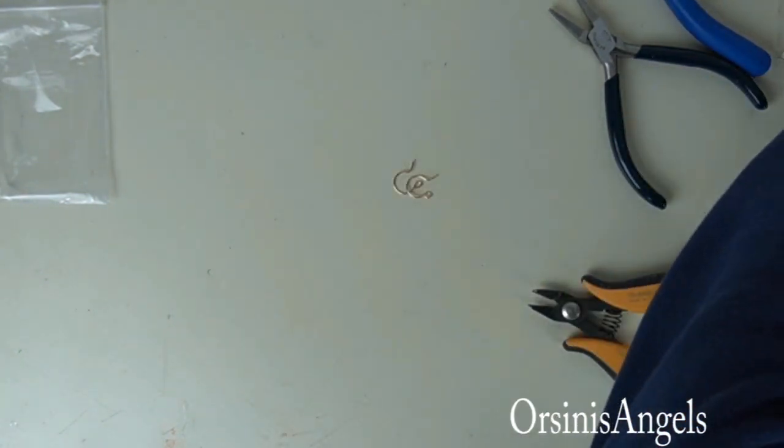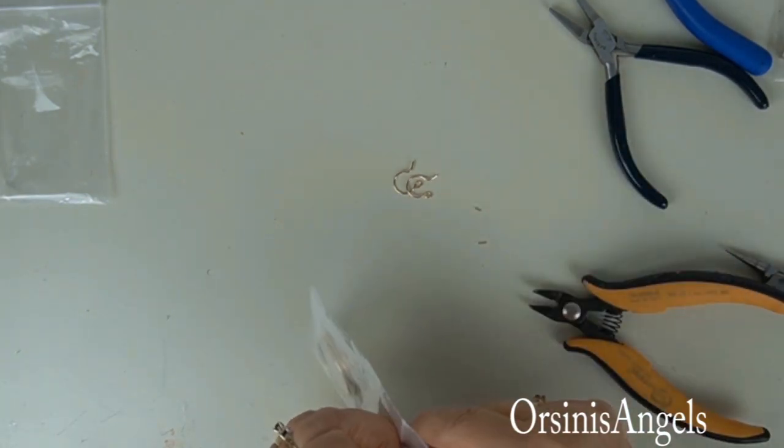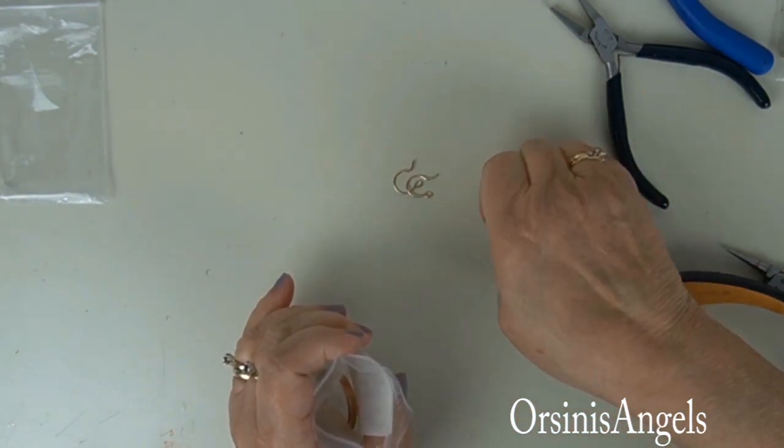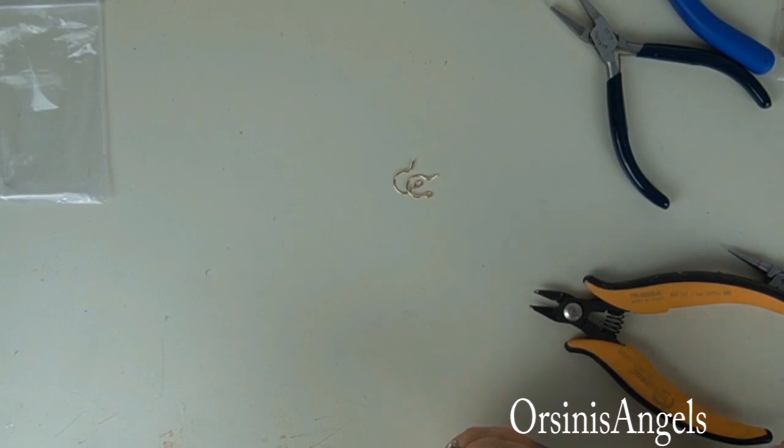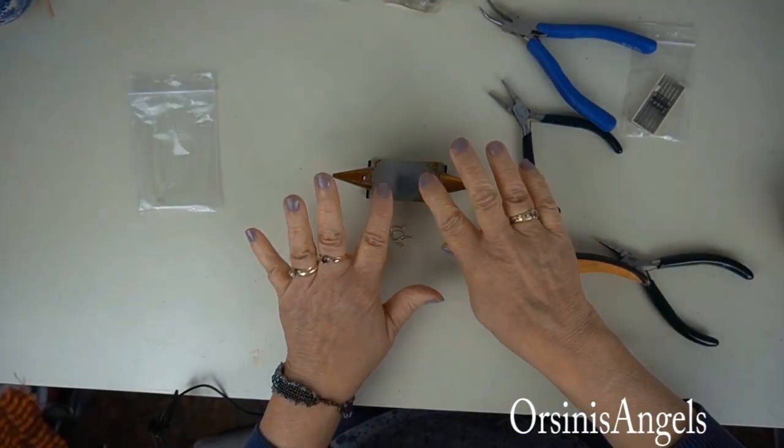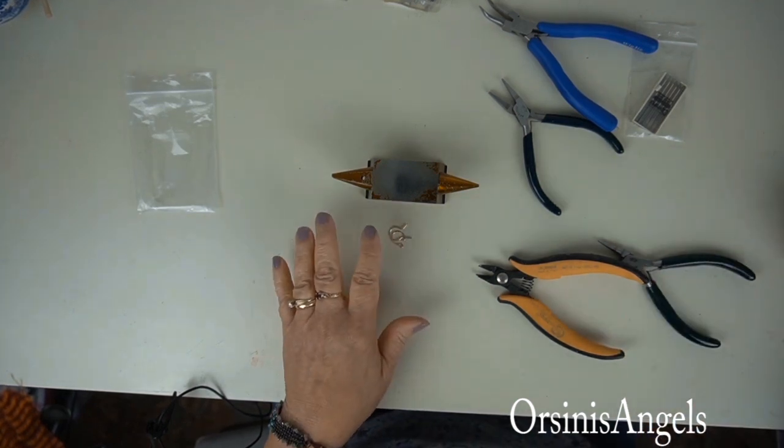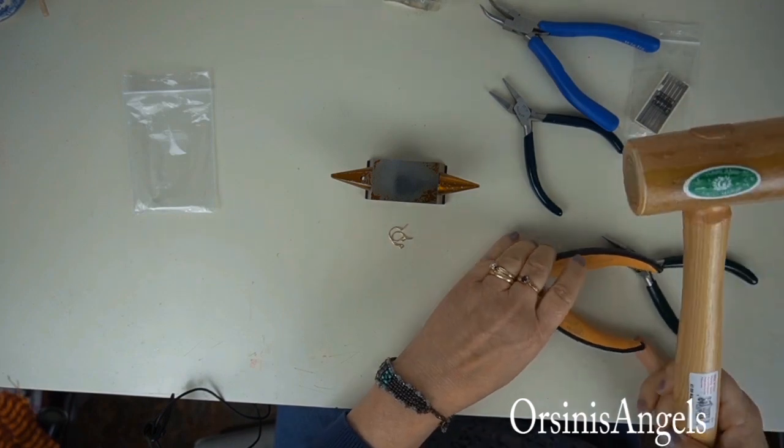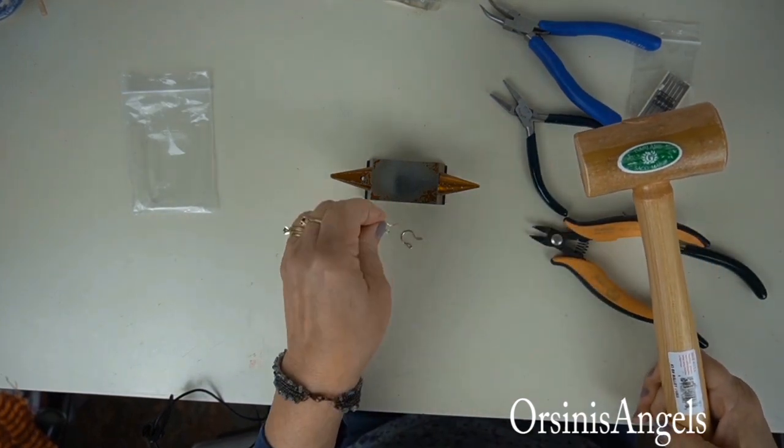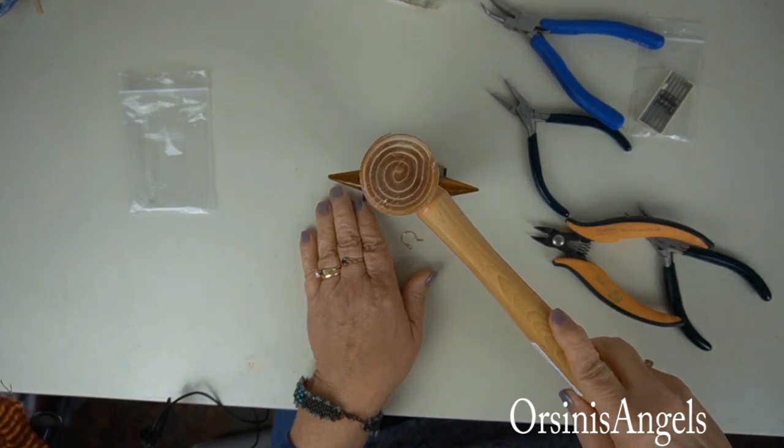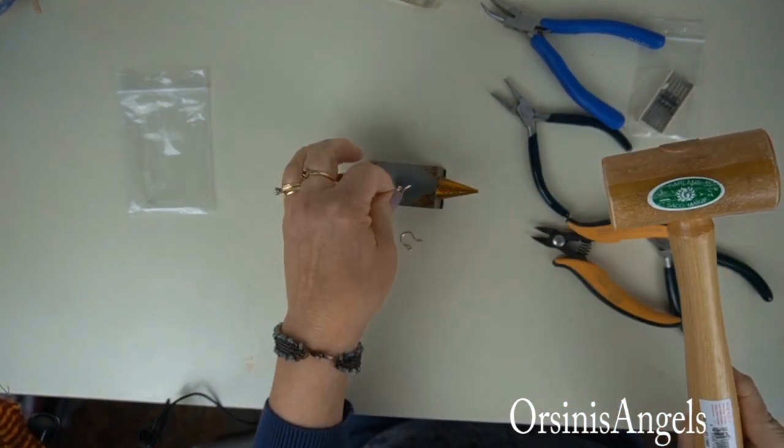If you do a lot of jewelry making, you can save these little pieces and then sell them at some point in time, or use them for other things. I have the anvil and in order to harden the earrings, I'm going to use a mallet and just kind of pound on the earring a little bit, and that's just to harden it.